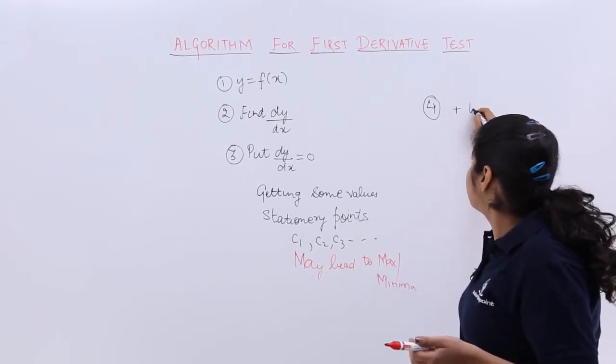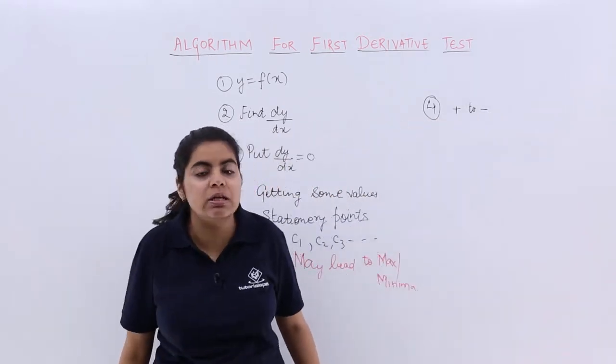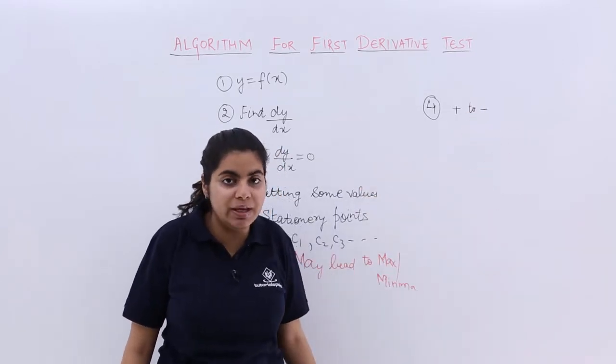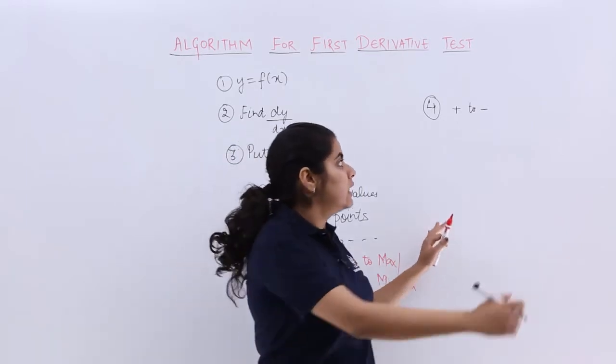If it changes sign from positive to negative - remember we did it in first derivative test previous video - so if my f prime of x changes sign from positive to negative as you move forward in the positive direction of the x-axis, then I say that it is leading to maxima.